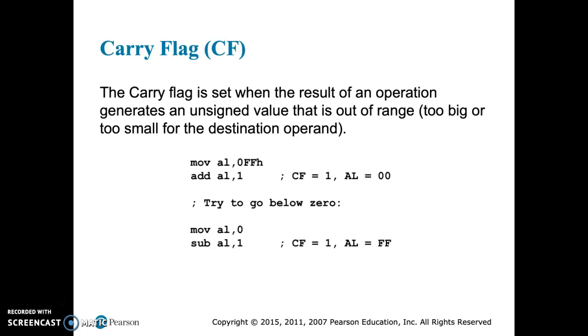So for example, we have a hexadecimal number FFh. We move it to our AL register. We add 1. The AL register, since it's 8-bit, can only allow for the value FFh. We can't have a bigger number than that. That's the largest number that can be there. So if we add 1 to it, it's unsigned, so it's going to set the carry flag to 1.